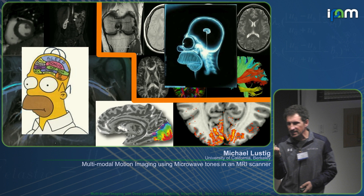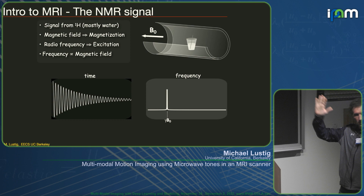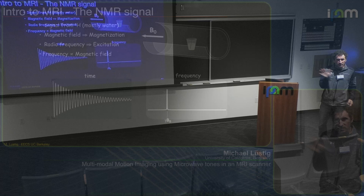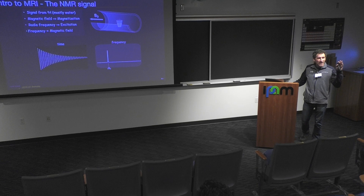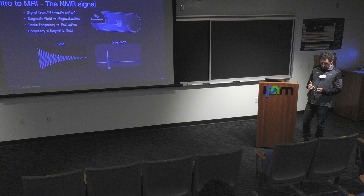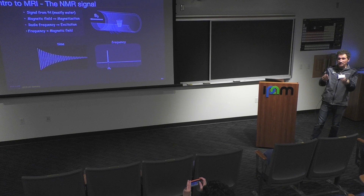While I'm not going to talk deeply about MRI, it's important to understand the physics and how the signal is picked up in order to understand what we're actually trying to do here — which is motion sensing inside an MRI scanner. Crash course: signal comes mostly from hydrogen atoms, mostly from water. You put a sample, like a glass of water, inside a magnetic field, and it gets magnetized or polarized.